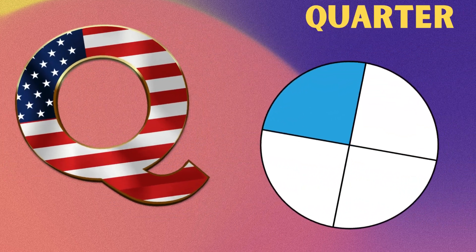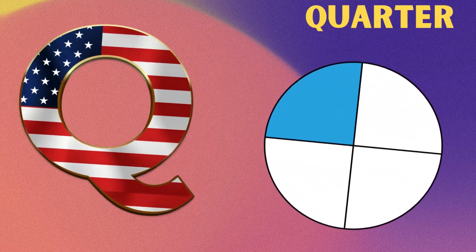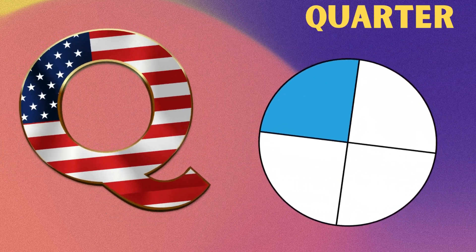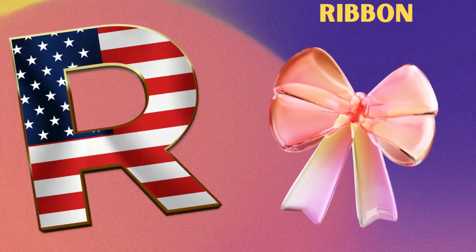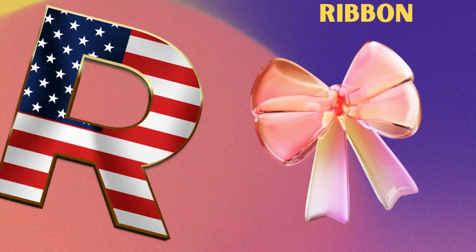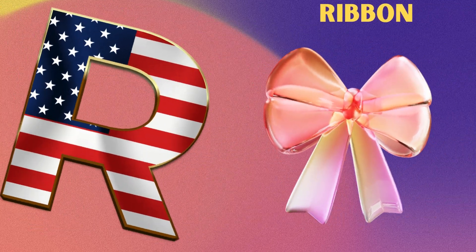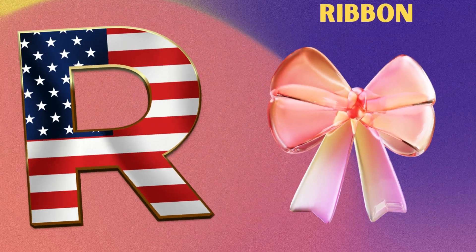Q is for quarter, quarter. R is for ribbon, ribbon.